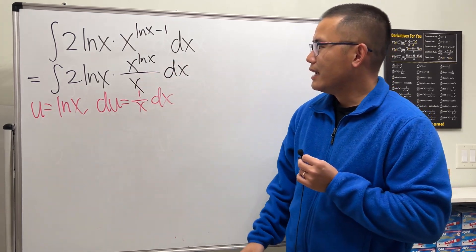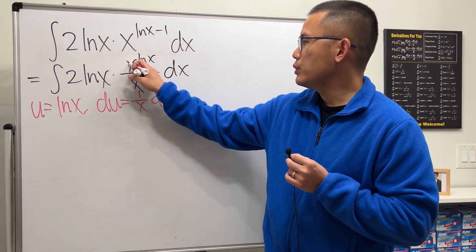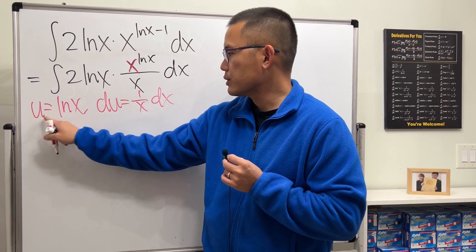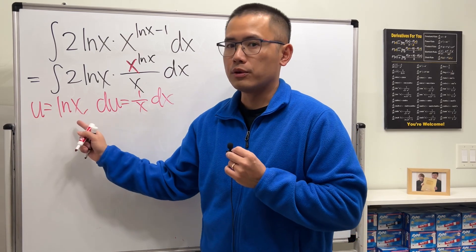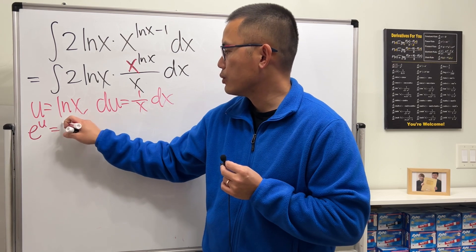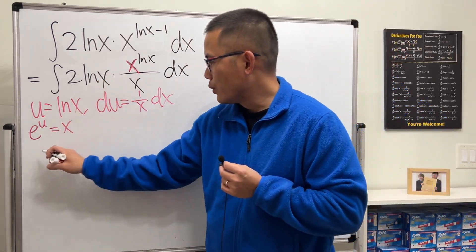Now to take this integral to the u world, notice here we also have the x, but it's okay because we can look at this equation and exponentiate both sides, so we get e to the u equal to x. So that's very nice.